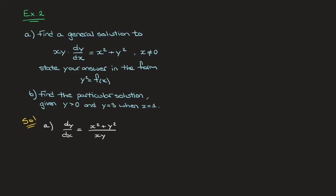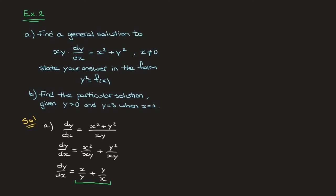It's quite clear that we're not going to be able to solve it by separating the variables directly. But looking at this fraction on the right hand side, we can see that we're going to be able to turn this into a homogeneous differential equation. To do that, let's write this as two distinct fractions: dy/dx equals x squared over xy plus y squared over xy. Now each of these two fractions can be simplified, giving dy/dx equals x over y plus y over x.